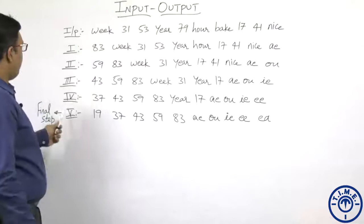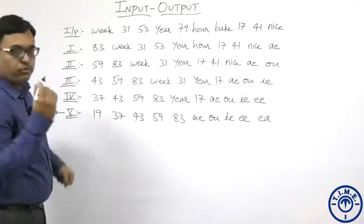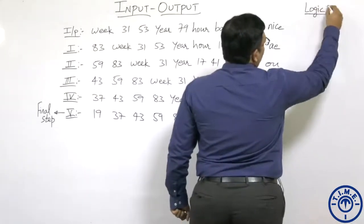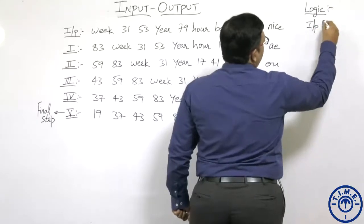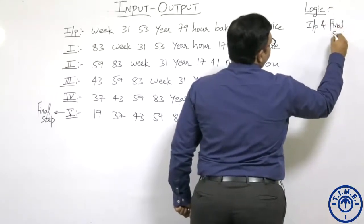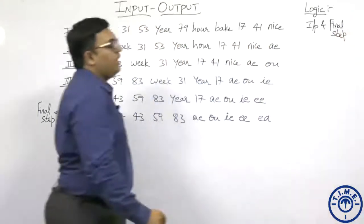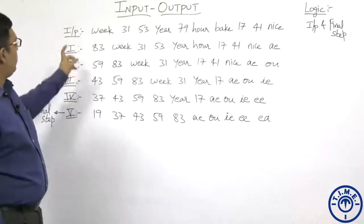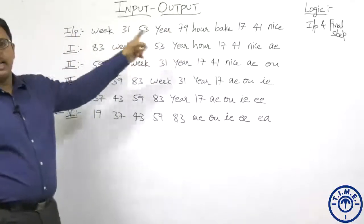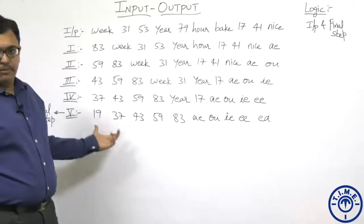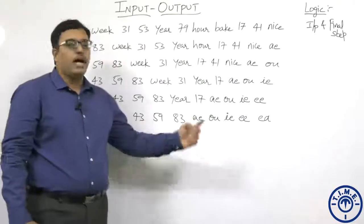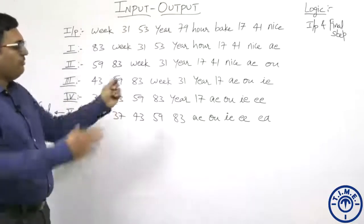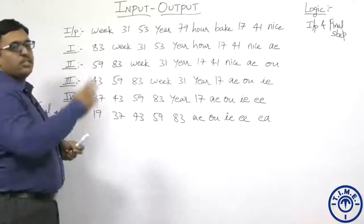For logic, we take input and final step. Taking input and final step, we will find the logic. In the input, the numbers and words are arranged randomly, but in the final step, the numbers are arranged in ascending order, starting with the lowest number to the highest. So first we will concentrate on the numbers.